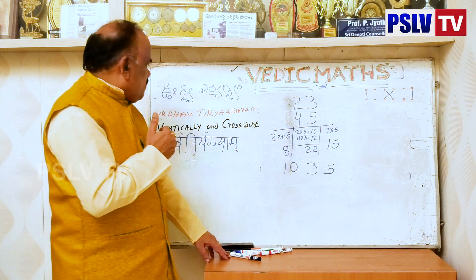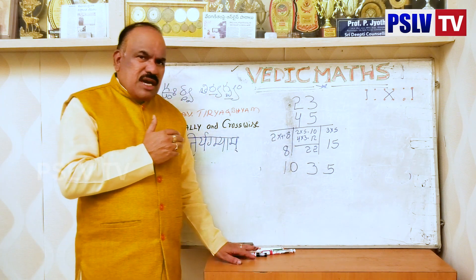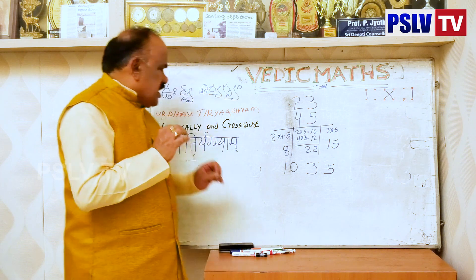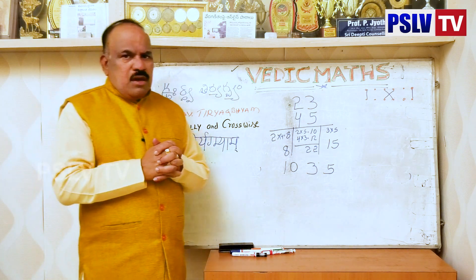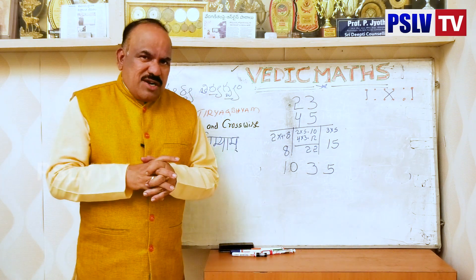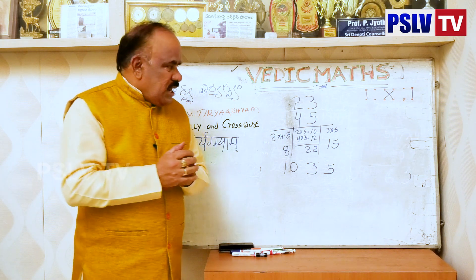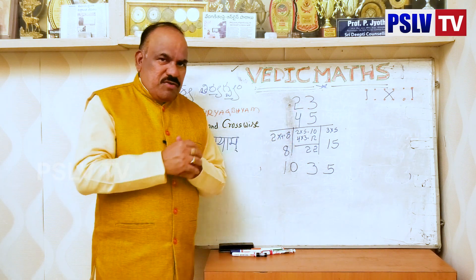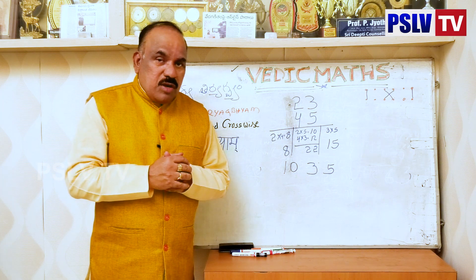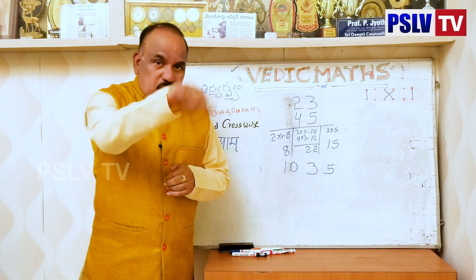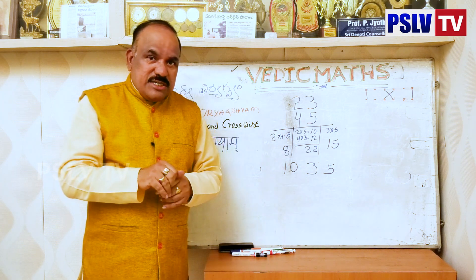This is the 3-sutra: vertically and crossways. I will show you how much difference it makes. There are problems like 25 and 45. The 3-sutra will multiply our speed. We have to apply the sutra and carry the values forward.